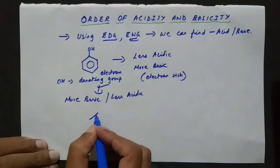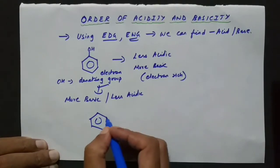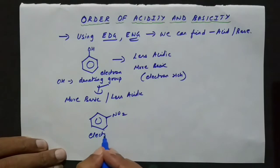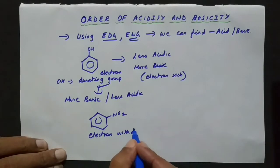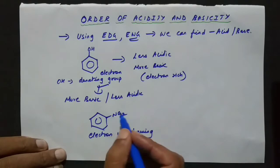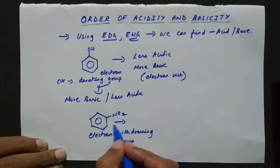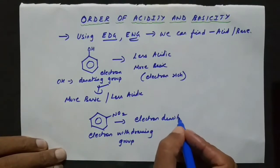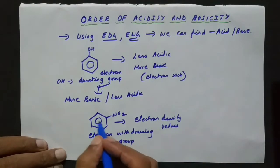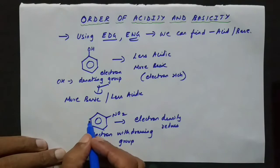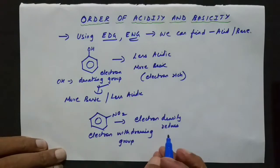Second scenario: let us take benzene with an NO2 group. We know that NO2 is an electron-withdrawing group — it is the strongest electron-withdrawing group. In this case, NO2 will take the electrons away, so the electron density inside the benzene ring will reduce. Whenever the electron density inside benzene decreases, the H⁺ is free to move away because it is not attracted as strongly.